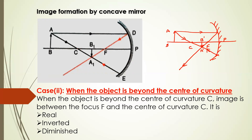From here we can see what the characteristics are. First, the image is going to be real because the rays are intersecting by themselves. Second, it is inverted because the arrowhead is pointing downward. Real is always an inverted image, and it is diminished — you can see the size of the image is smaller than the object. So these are the characteristics when the object is beyond the center of curvature.